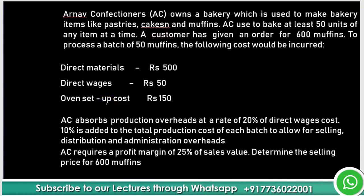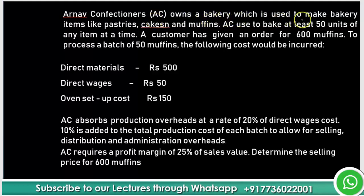Another problem in batch costing. Arnav Confectioners (AC) owns a bakery which makes items like pastries, cakes, and muffins. AC bakes at least 500 units of any item at a time. A customer has given an order for 600 muffins. To process a batch of 50 muffins, the following costs would be incurred.